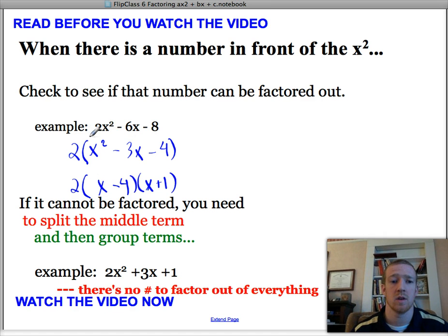That factors just as normal. If there's nothing that comes out of all of them, you have a coefficient greater than 1, so you have this number in front of your x squared, then we're going to have to do a little bit different method.